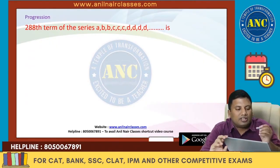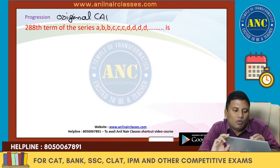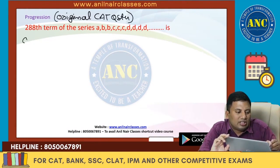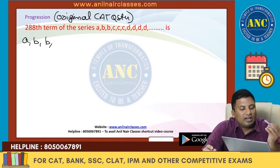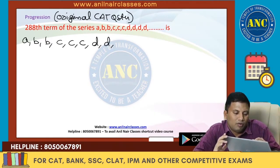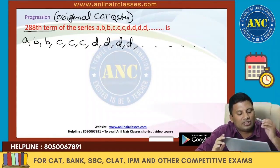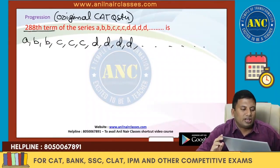Next question: find the 288th term of the series. This is an original CAT question. The series is A, B, B, C, C, C — where the first letter is written once, the second letter is written twice, the third letter is written thrice, the fourth letter four times, and so on. Which alphabet represents the 288th term?